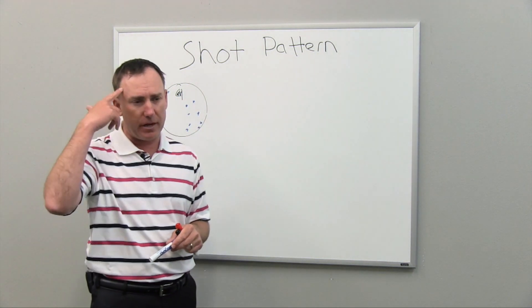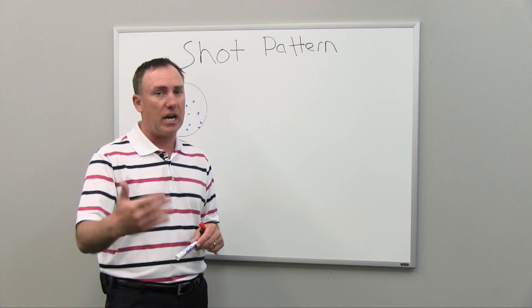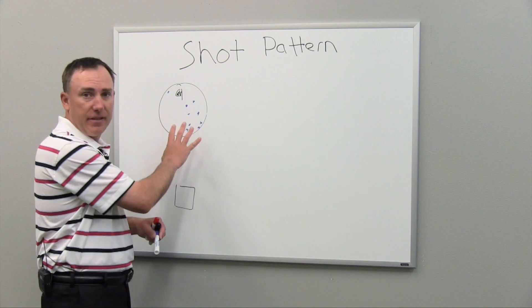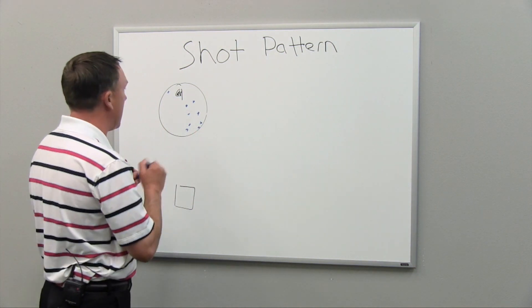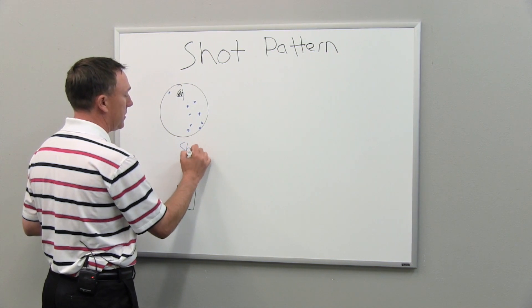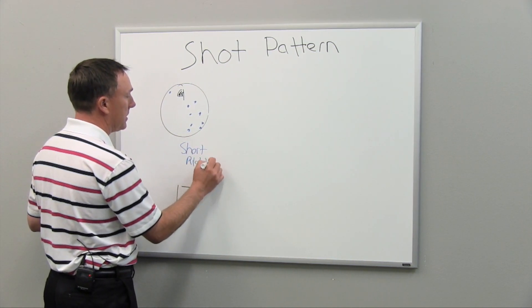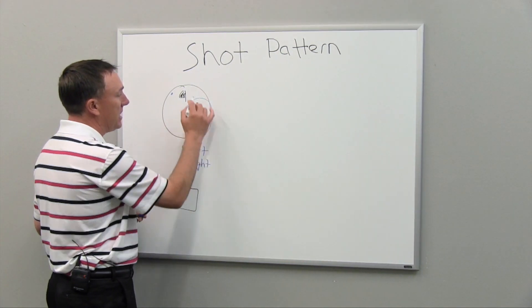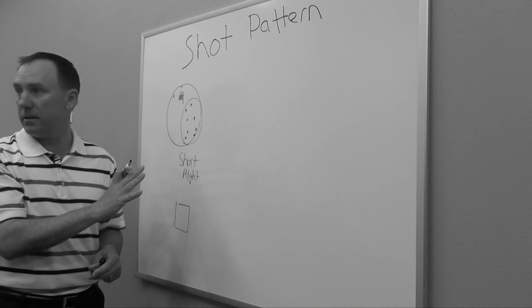I want you to think about yourself right now. When I'm hitting shots into the green, is there a pattern of shot that I see? If I was to define this pattern right here, I would define this pattern as short and right, because the grouping of shots is definitely short of the pin and definitely to the right of the pin.